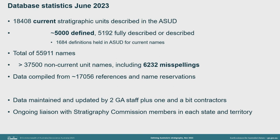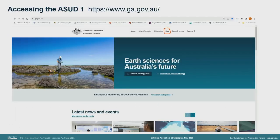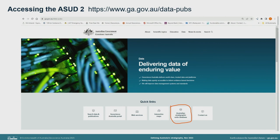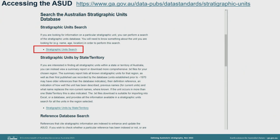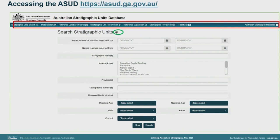We'd really like to change those statistics so that we have more defined units than misspelt ones. The database is accessible in various ways — whether you go in from the GA front page and click on data, and then the quick link to our information pages, or you bookmark the information page itself, which has links to useful advice and people as well as to the database search, or you go directly into the search.